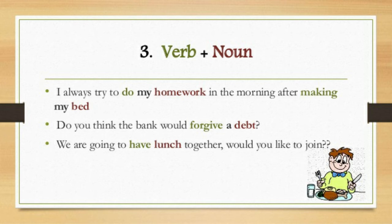Next example: 'Do you think the bank would forgive a debt?' — 'forgive' is the verb and 'debt' is the noun, forming the collocation 'forgive debt.' Another example: 'We are going to have lunch together — would you like to join?' — 'have' is the verb and 'lunch' is the noun. So the third form is verb plus noun.